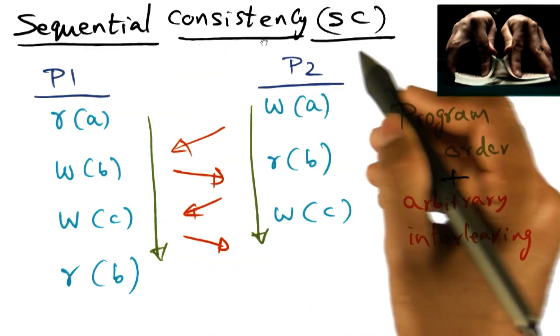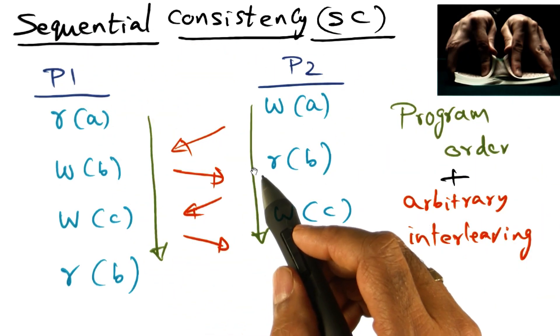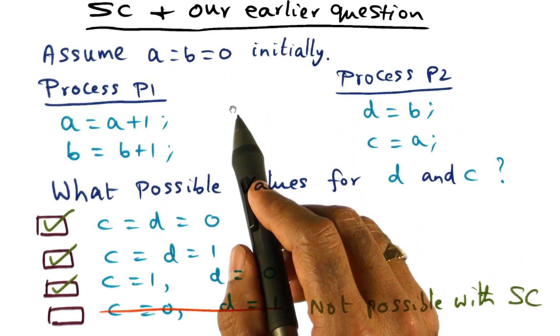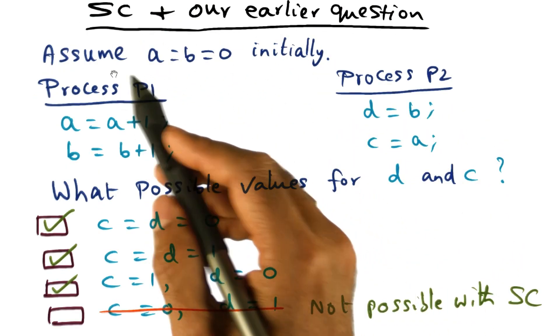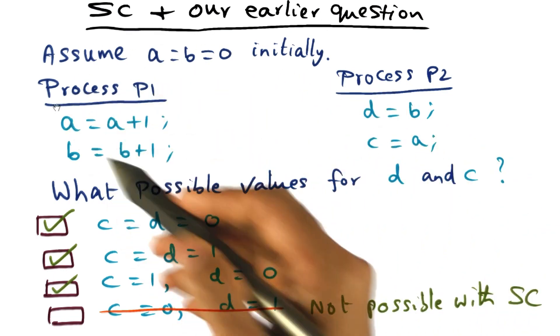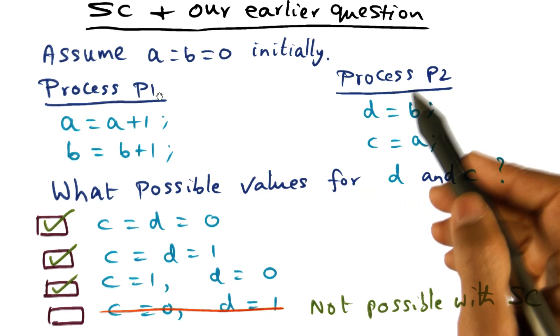So now, having seen the sequential memory consistency model, what we can do is go back to our original example and ask the question: what are all the possible outcomes for this particular set of memory accesses performed on P1 and P2?